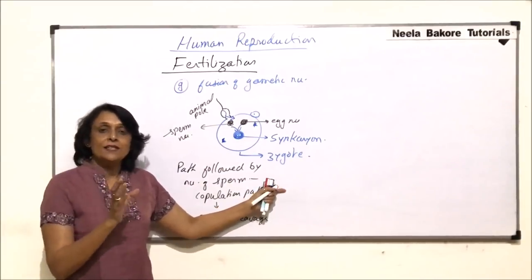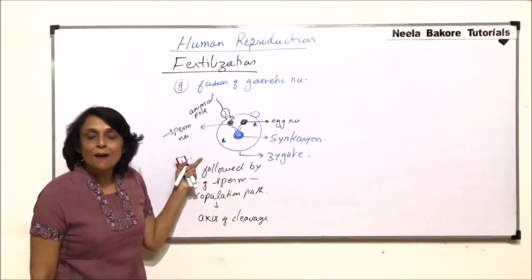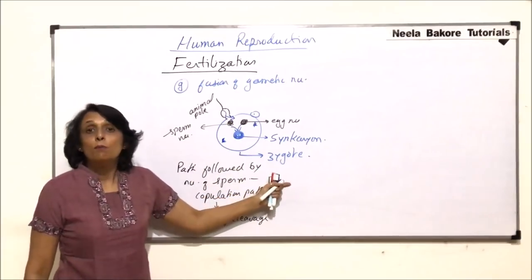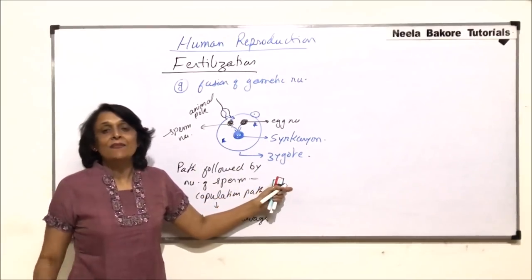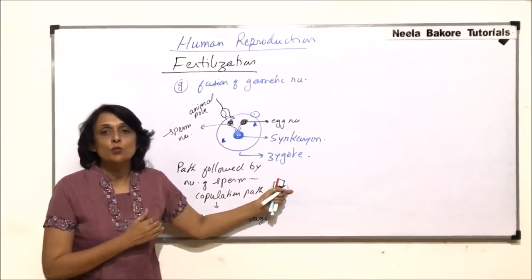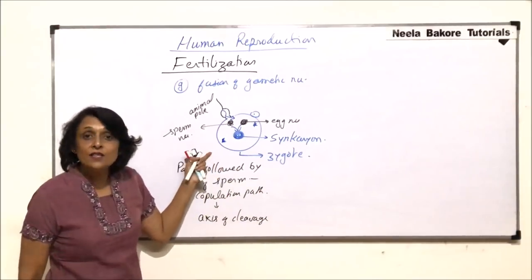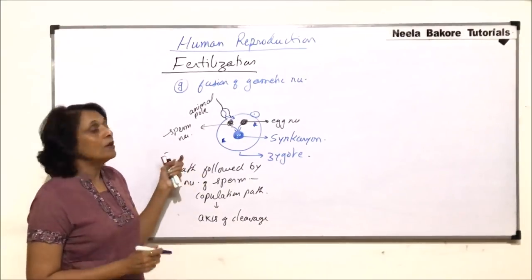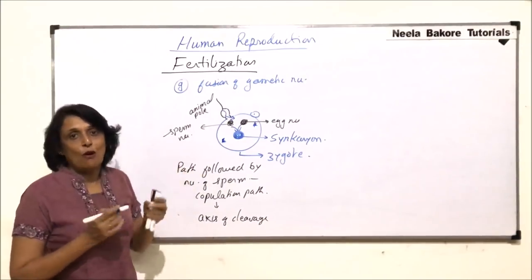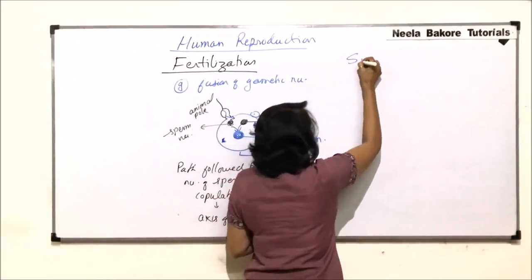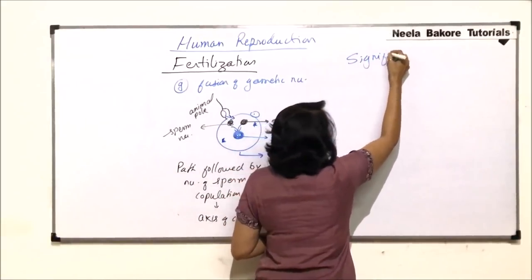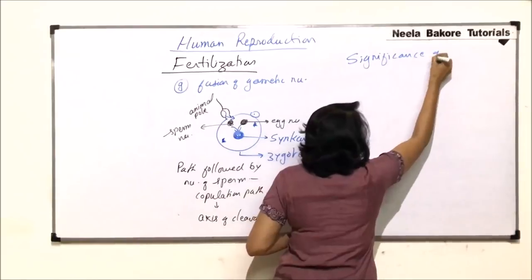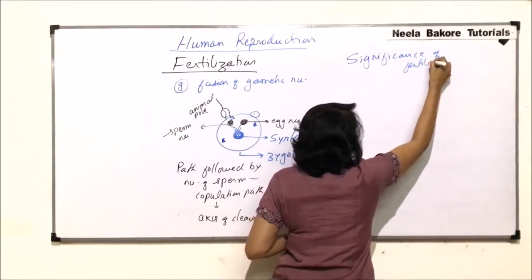So we say fertilization is fusion of male and female gamete to form a diploid zygote, but we have seen that there are so many events which take place for this fusion to actually get completed. So let us talk about what is the significance of fertilization.